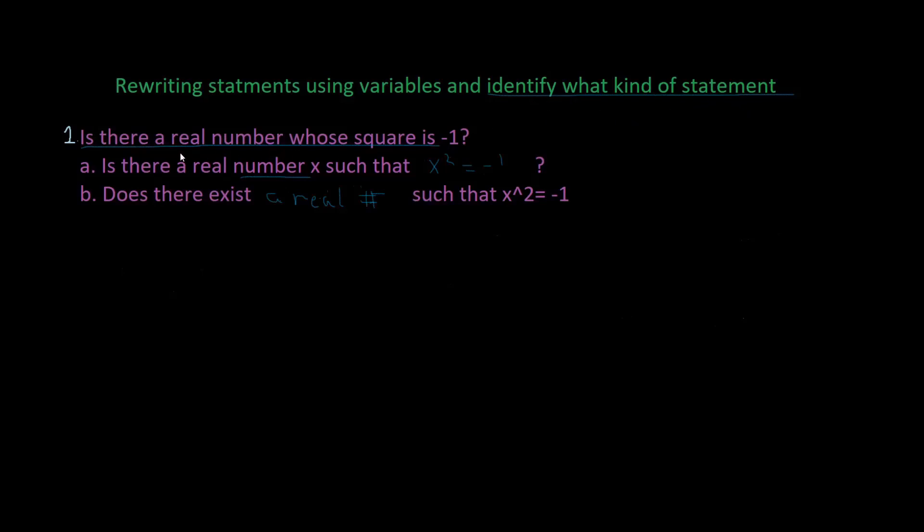So this is definitely not a universal statement because it doesn't have for all in it. And it's not a conditional statement because it doesn't follow the if then format. And it's not existential because the property is not true, therefore it's none.